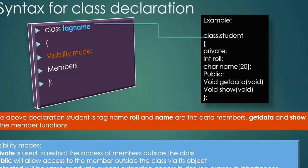The visibility modes available for classes are private, public, and protected. Private is used to restrict access of members outside the class — anything declared under private is only limited to the class. Public visibility mode allows members to be accessed outside the class, but only via its object. Protected is the same as private except it extends access to derived classes, which we will see in detail later.